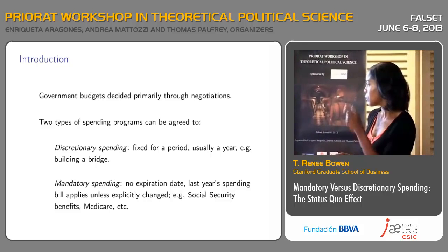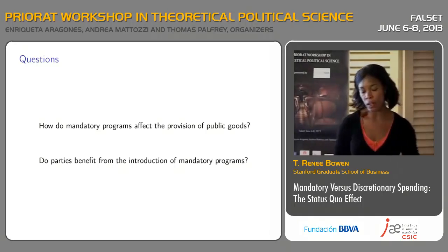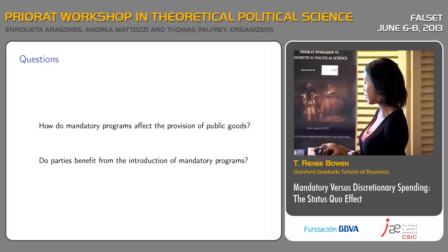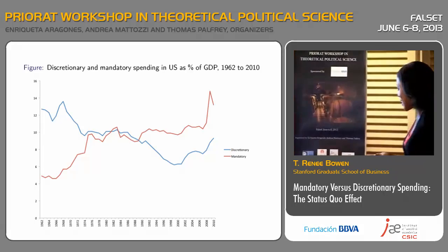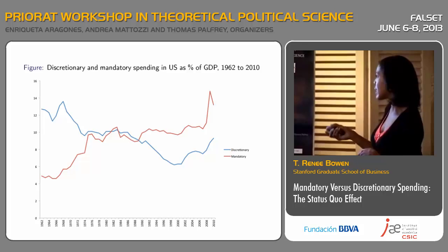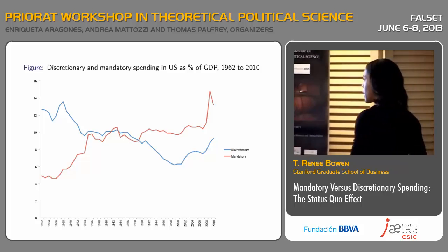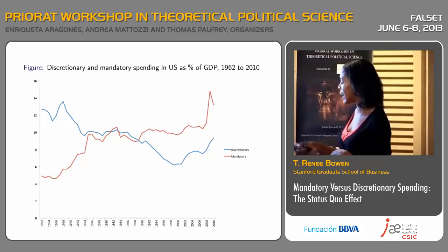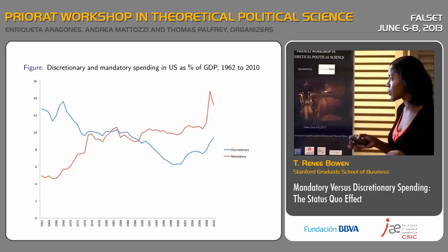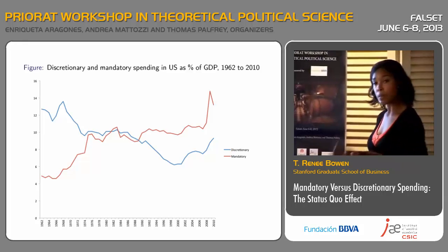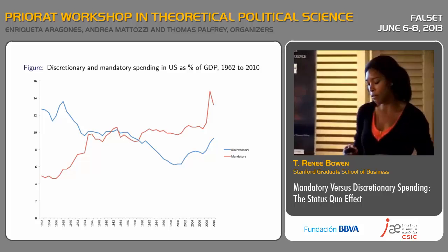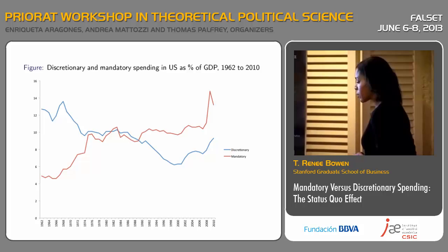Those are the two types of spending programs we consider in this paper. In the United States, these categories are actually written into the tax code, and we can look at the data on these categories of spending. The red line indicates mandatory spending programs between 1962 and 2010, and the blue line indicates discretionary spending programs. Clearly, the trend for mandatory is increasing and the trend for discretionary is decreasing. This paper is not about explaining this trend — this picture is merely here to say it would be nice to understand the effects of these mandatory programs, because clearly they are important drivers of the budget.